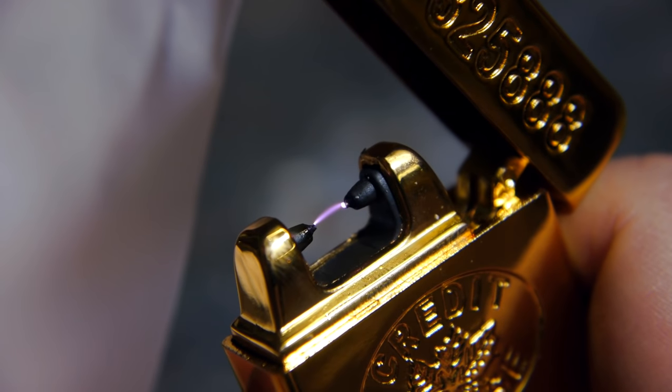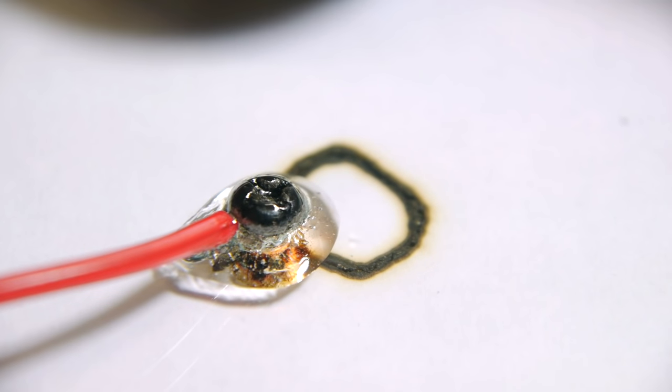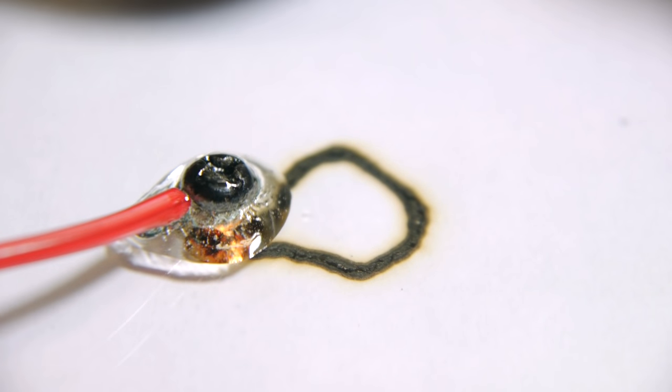To turn this into a functional plasma cutter, the first thing I'll need to make is a heatsink to keep the material around the arc cold enough that it doesn't burst into flame.